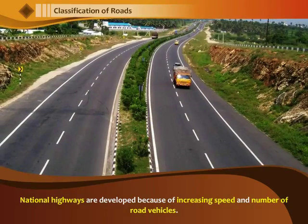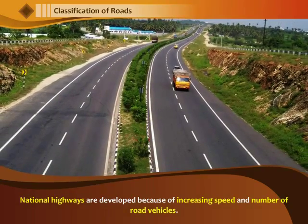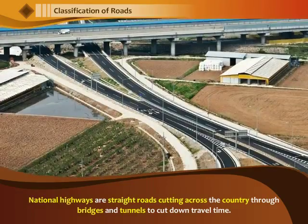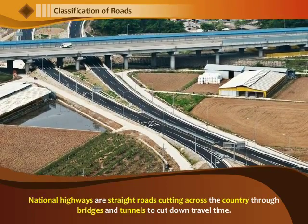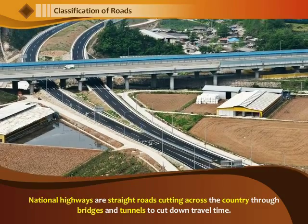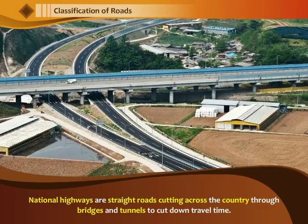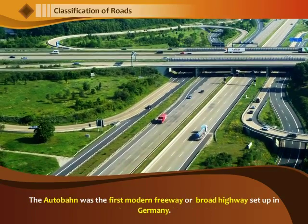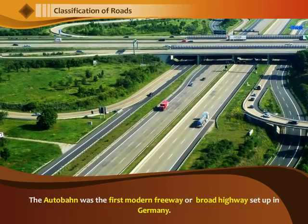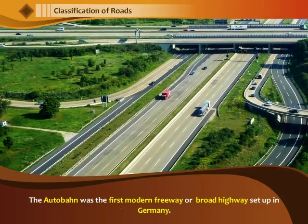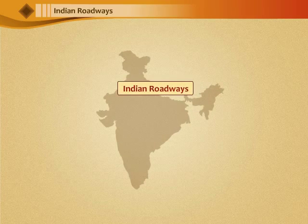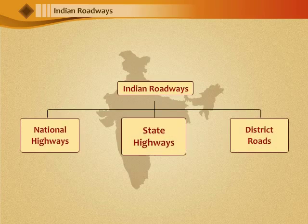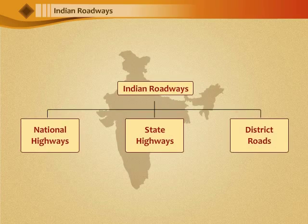National highways are developed because of increasing speed and number of road vehicles. National highways are straight roads cutting across the country through bridges and tunnels to cut down travel time. The Autobahn was the first modern freeway or broad highway set up in Germany. In India, roadways are divided into three categories, namely national highways, state highways and district roads.